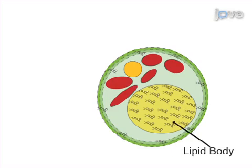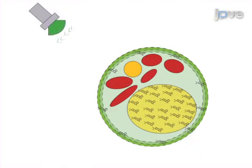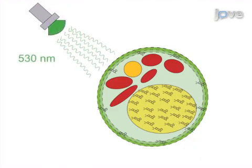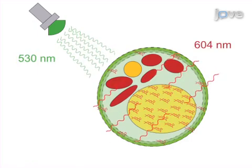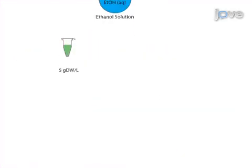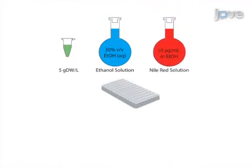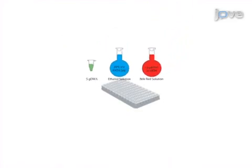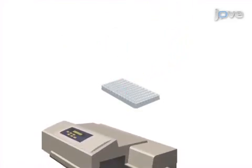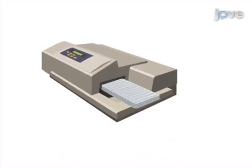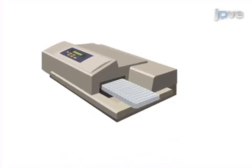Next, the samples are exposed to an excitation light source of 530 nanometers, causing the Nile Red absorbed in the neutral lipid bodies to fluoresce at 604 nanometers. Results are obtained on a mass scale by conducting the individual tests in a microwell multiplate and using a spectrophotometer to produce rapid fluorescence readings.